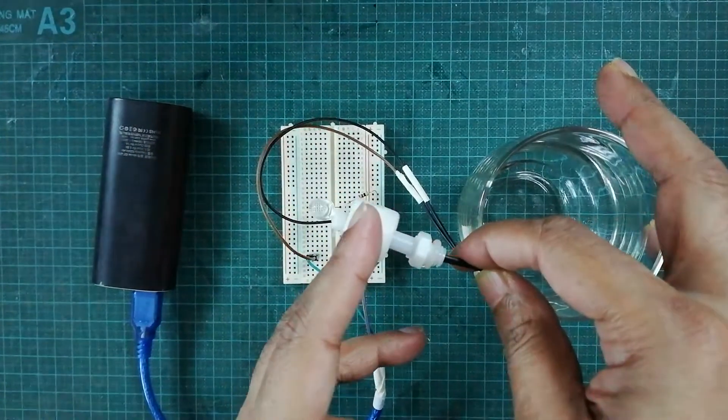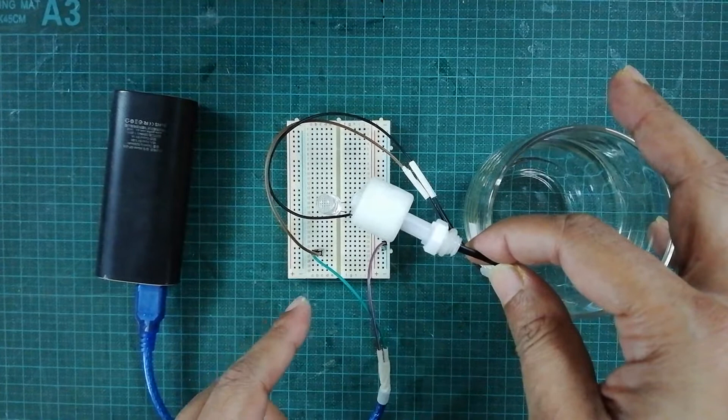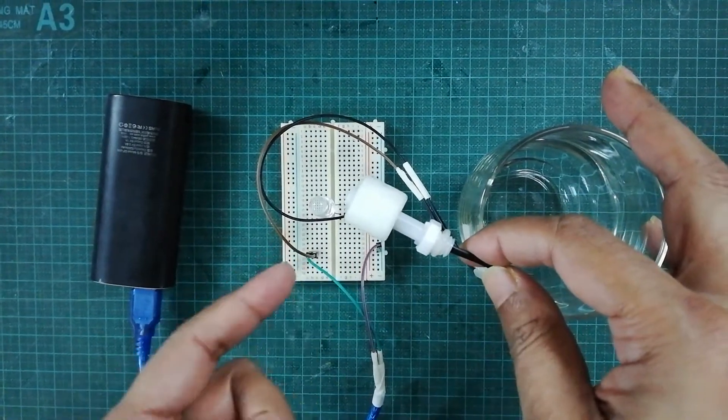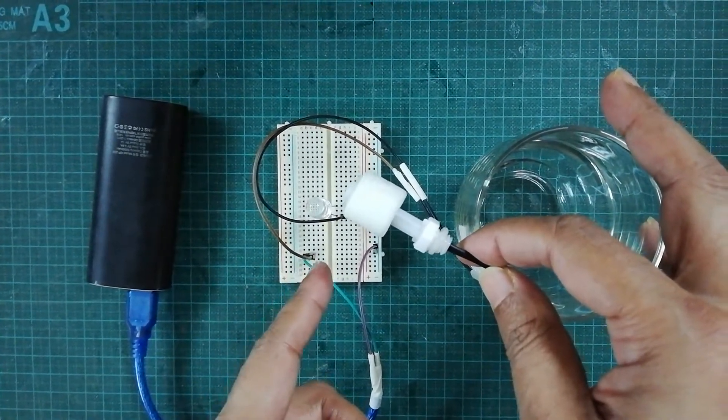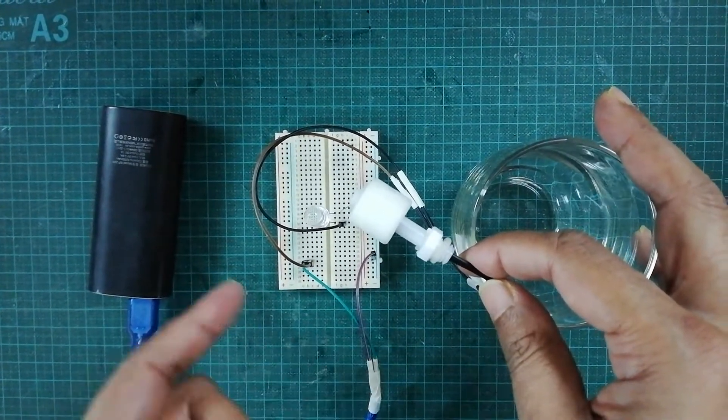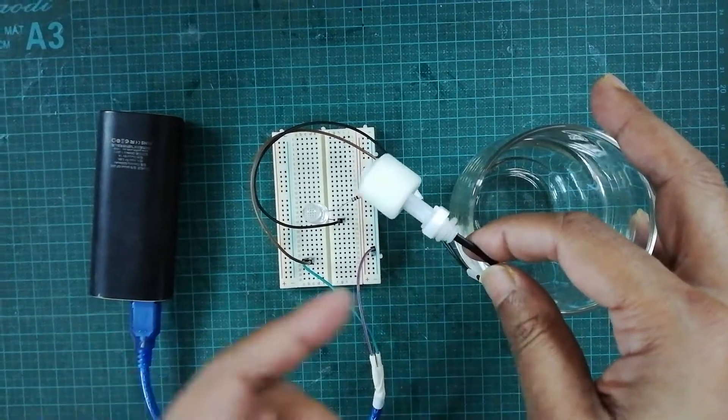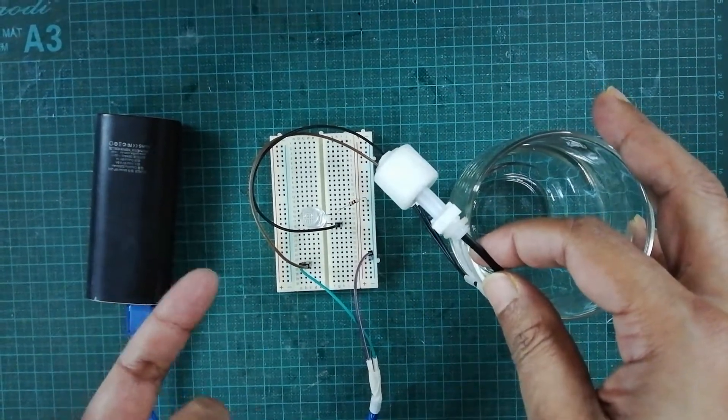When it moves in this way and the contact is completed, it gives a signal to an external circuit. By using this signal, we can connect an LED or an alert system to make a water level indicator.